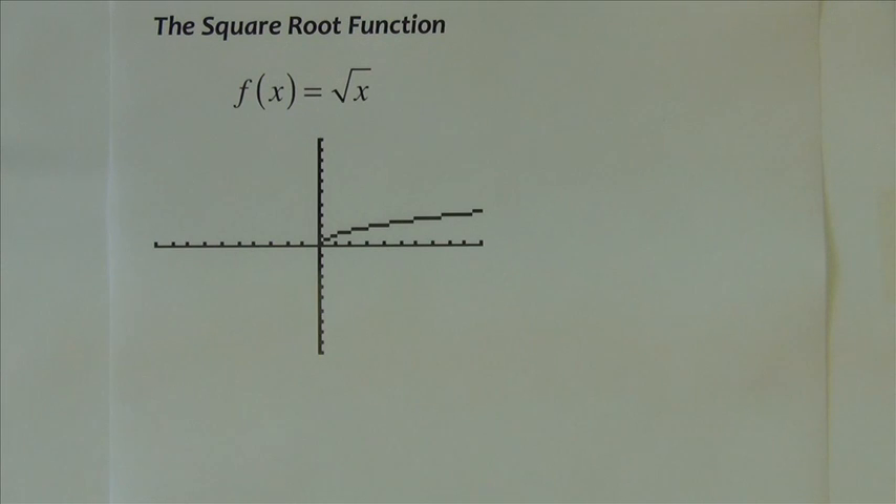Another one of our power functions that we're going to go over in this section is the square root function. Again, I would tell you to go back and look at your 1-3 notes, as it's there that we talked about domain and range, and is it continuous or not, any symmetry, asymptotes, et cetera. It was all discussed in that particular section. So go back and watch that video if you need to.